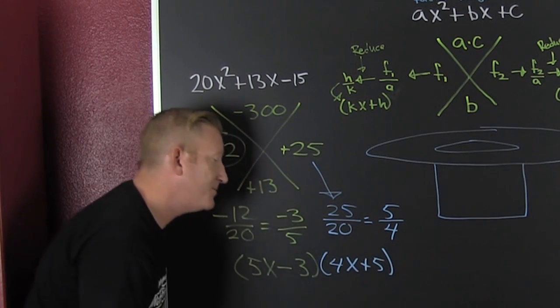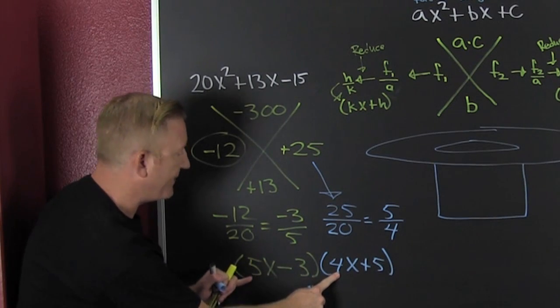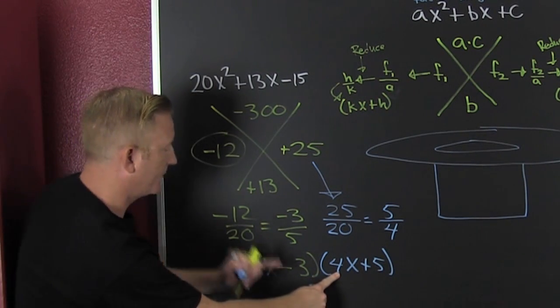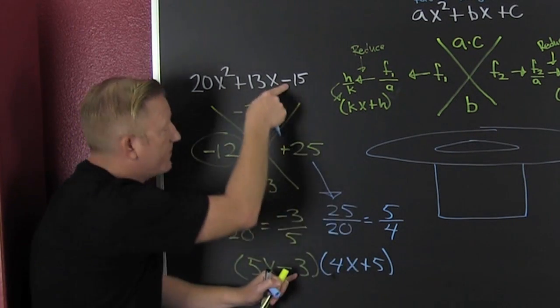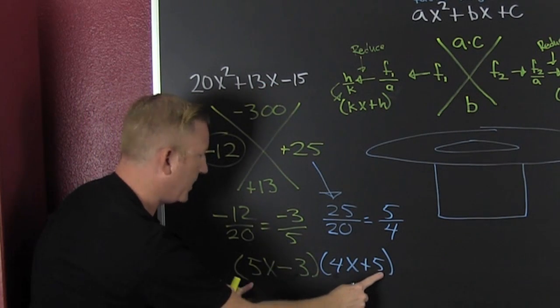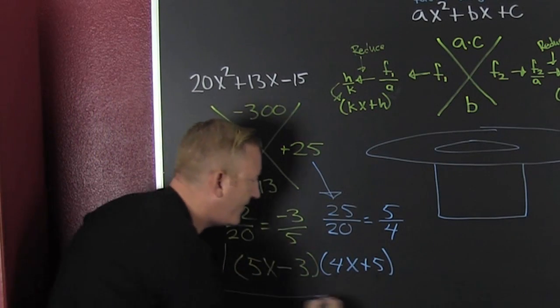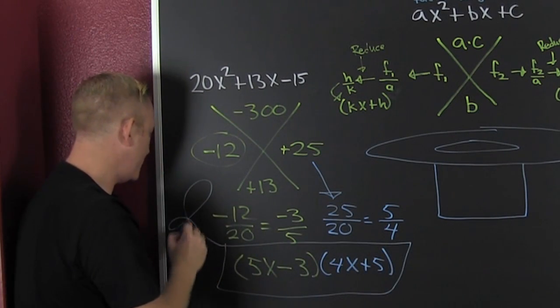And it's positive. So that's a 4x plus a 5. I'm telling you it's magic. But if you don't believe me, you multiply that out. 5 times 4, that's 20. Minus 3 times 5, that's minus 15. And then that's minus 12 plus 25. That's 13.